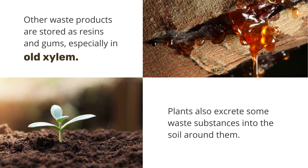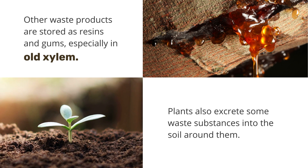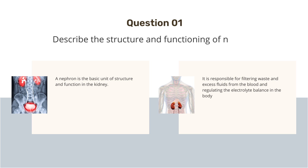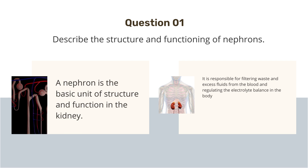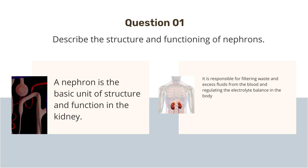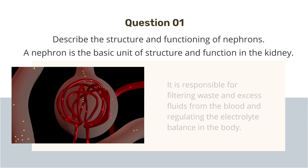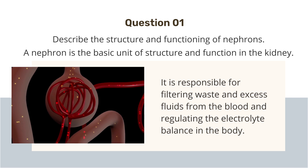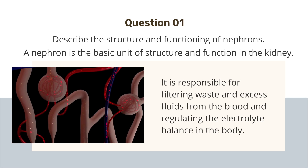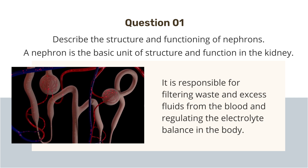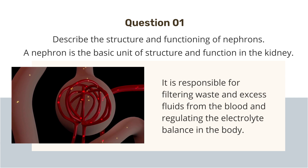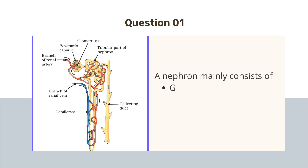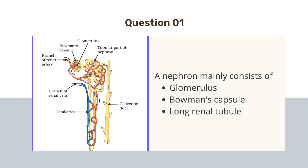Before concluding this chapter, let's go through some important questions. Describe the structure and functioning of nephrons. A nephron is the basic unit of structure and function in the kidney. It is responsible for filtering waste and excess fluids from the blood and regulating the electrolyte balance in the body. Each kidney possesses approximately 1 to 1.5 million nephrons. A nephron consists of a glomerulus, Bowman's capsule, and a long renal tube.